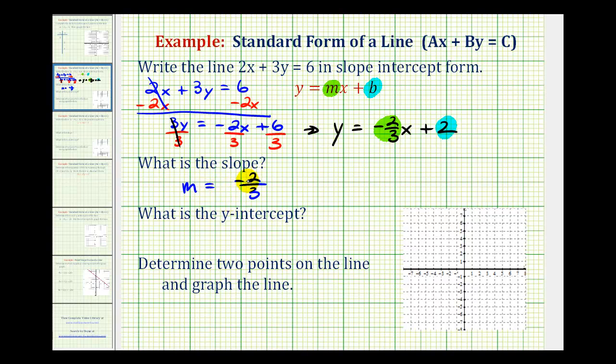Remember the slope tells us the rise over the run or the vertical change with respect to the horizontal change. So if it's a negative fraction, I like to put the negative sign up into the numerator, which tells me the vertical change would be down 2 and the horizontal change would be right 3 because of the positive 3.